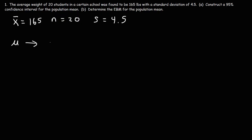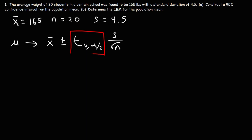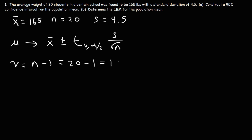The population mean is going to be within the sample mean x-bar plus or minus the t-score — t sub nu sub alpha over 2 — times the sample standard deviation s divided by the square root of n. The subscript nu (the Greek letter that looks like a v) equals n minus 1, which represents the degrees of freedom. With n equal to 20, we get 20 minus 1 equals 19 degrees of freedom.